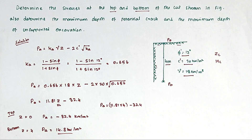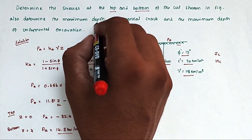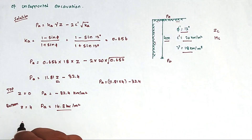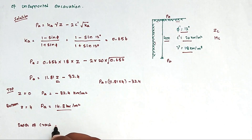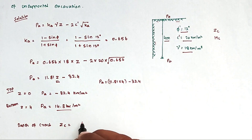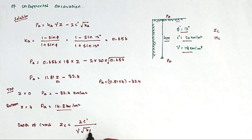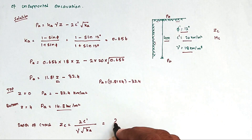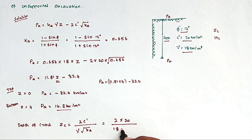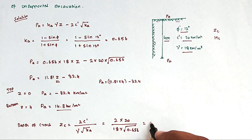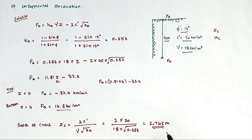Now we find the maximum depth of the potential crack. The formula is Zc = 2C′ / (γ × √KA). Substituting: Zc = (2 × 20) / (18 × √0.656). Solving this, we get Zc = 2.745 meters.